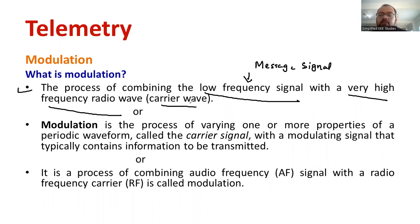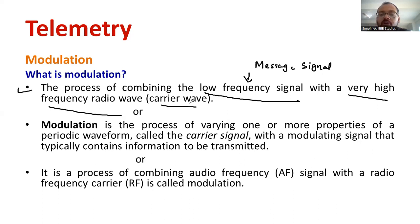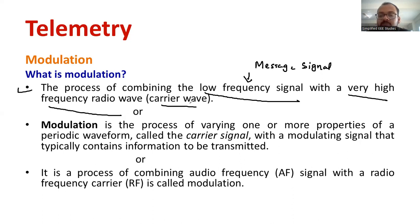The message signal and carrier signal are superimposed or combined. Why is this required? Because the message signal alone cannot be transmitted for longer distances. So in order to transmit for a longer distance, the frequency of the message signal has to be increased. Therefore, the low frequency signal will be superimposed with the high frequency carrier waveform, and then only we can transmit the signal from the transmitter side.